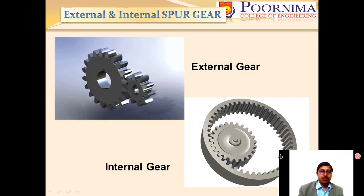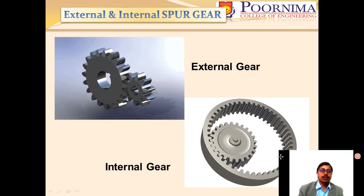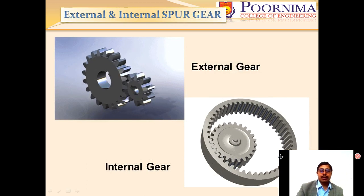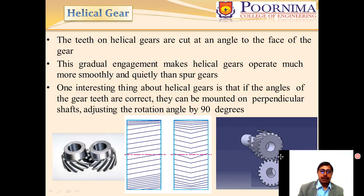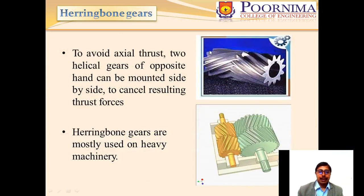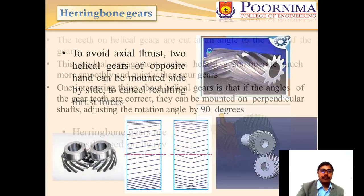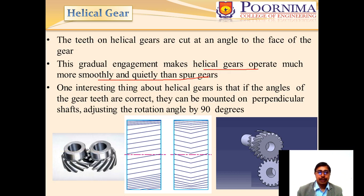Here you can see an animation showing how external gears and internal gears work. For the helical gear, the teeth are cut at an angle to the face of the gear. This gradual engagement makes helical gears operate much more smoothly and quietly than spur gears.